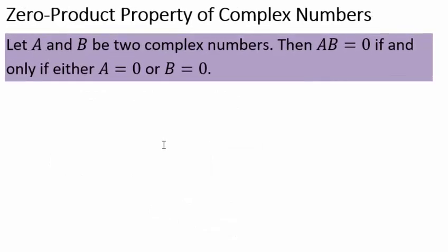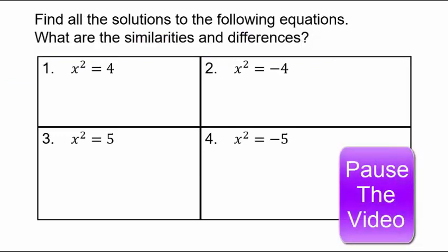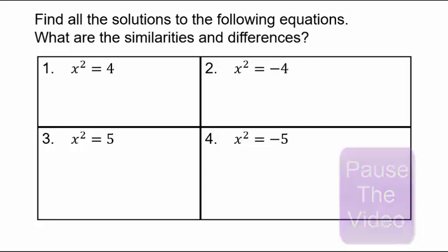Two complex numbers multiplied together give 0 if and only if either factor is 0. This allows us to solve any quadratic equation. Let's look at several examples — pause the video and find all solutions to the following equations, then talk about the similarities and differences between them.